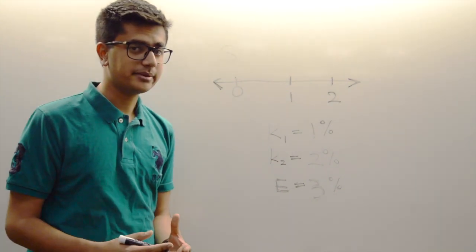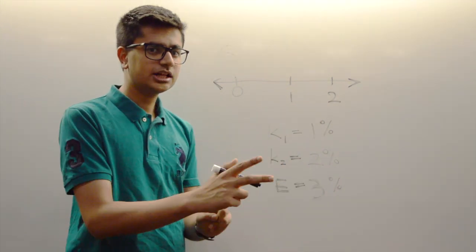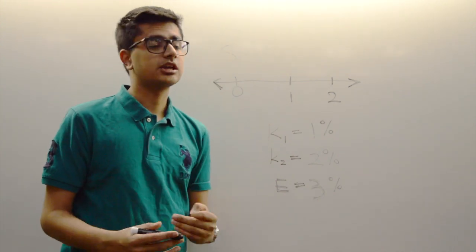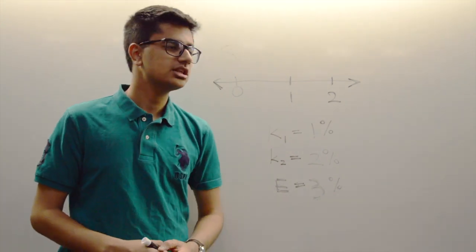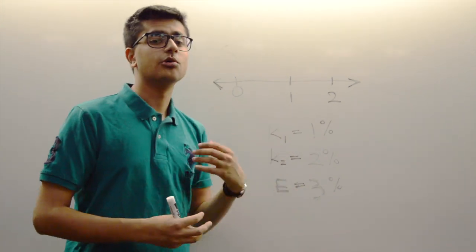So expectations theory basically says that if the return is exactly the same, investors do not care. They do not differentiate between the strategies. They're equally likely to go for either of them.